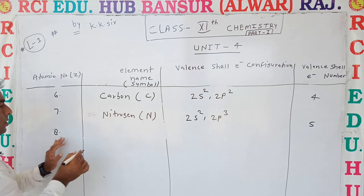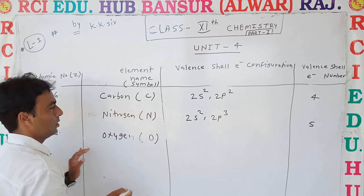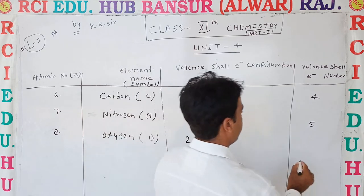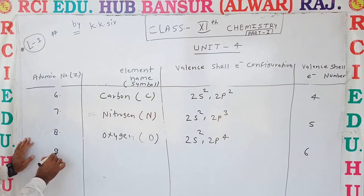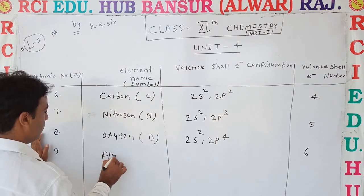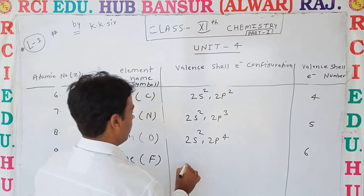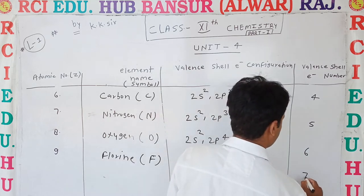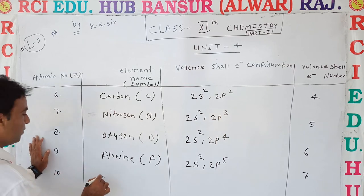Atomic number 8 is Oxygen. Its valence shell electron configuration is 2s2 2p4, giving 6 valence electrons. Atomic number 9 is Fluorine, represented by F. Valence electron configuration is 2s2 2p5, giving 7 valence electrons. Atomic number 10 is Neon.